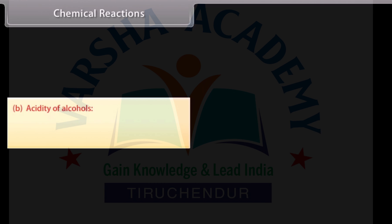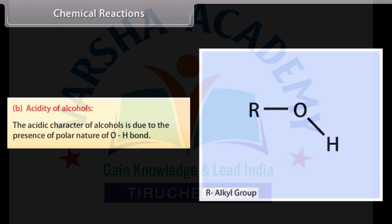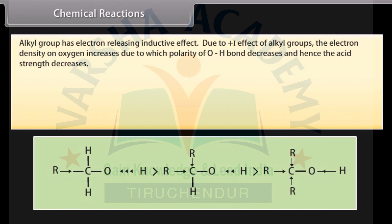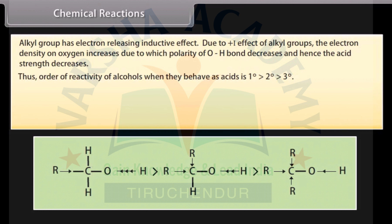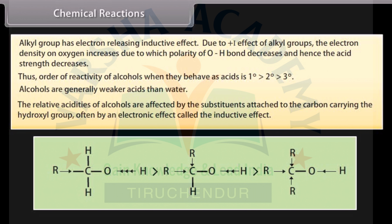The acidic character of alcohols is due to the presence of the polar nature of the O-H bond. Alkyl groups have an electron-releasing inductive effect. Due to the +I effect of alkyl groups, the electron density on oxygen increases, decreasing the polarity of the O-H bond, and hence the acid strength decreases. Thus, the order of acidity of alcohols is: primary alcohol, followed by secondary and tertiary alcohol. Alcohols are generally weaker acids than water, and their relative acidities are affected by substituents on the carbon carrying the hydroxyl group, often by the inductive effect.